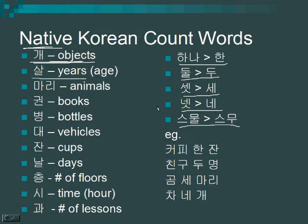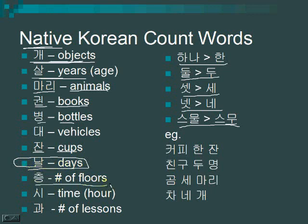For age, use 살. For example, 스무 살이에요 means 'I am twenty years old,' and 열여섯 살이에요 means 'I am sixteen years old.' 마리 counts animals. 권 counts books. 병 counts bottles. 대 counts vehicles or machines. 잔 counts cups or glasses. 날 counts days, though it's not very popular. 층 counts floors. 시 is for time — the hour. So 한 시 is one o'clock, 두 시 is two o'clock, 세 시 is three o'clock. And 시간 means number of hours — 한 시간 is one hour, 두 시간 is two hours, 세 시간 is three hours.